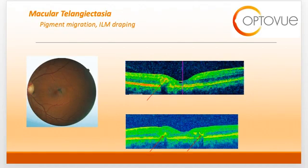As the disease progresses, the outer retina becomes involved. This slide shows RPE hyperplasia that occurs as a result of continued damage to the outer retina and photoreceptor layer. Hyperreflective areas on OCT correlate to RPE hyperplasia or pigment migration, as can be seen by the red arrows on this scan.